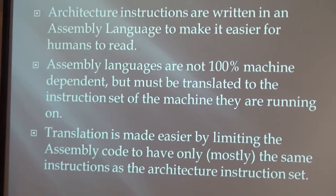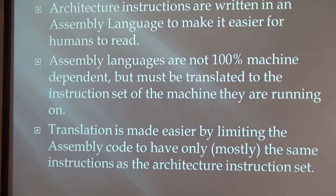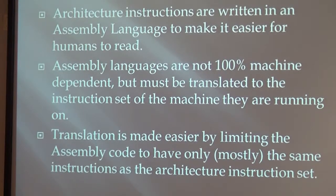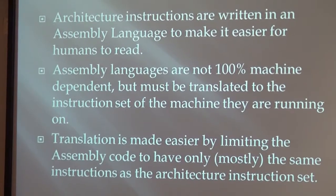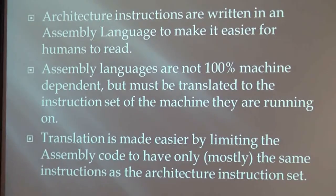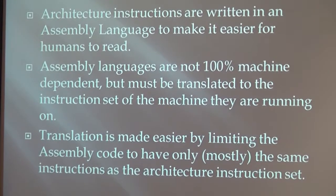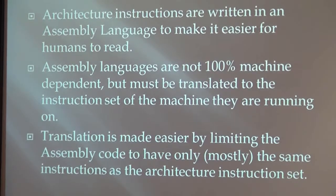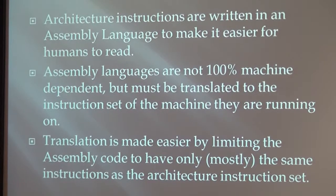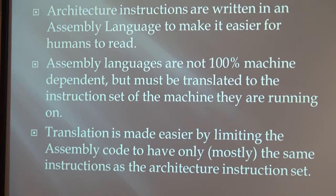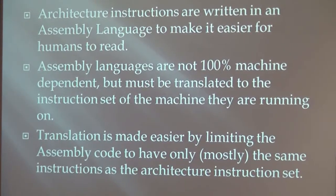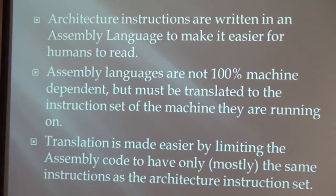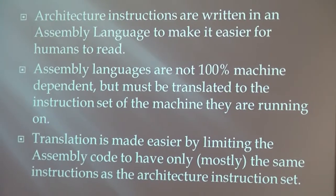Translating down: the compiler translates down from a semi-readable language — assembly language — to binary machine language. The architecture instructions themselves are written in binary, but we type them in assembly language so we can actually read it, because trying to read binary is not fun or easy. Assembly languages are not 100% machine dependent, but must be translated to the instruction set of the machine they are running on. This is usually done by a compiler, and compilers are complicated. Translation is made easier by limiting the assembly code to mostly only the same instructions as the architecture set. You can sometimes make pseudo-instructions that contain multiple instruction set instructions, but that's done as rarely as possible to speed up the translation process.